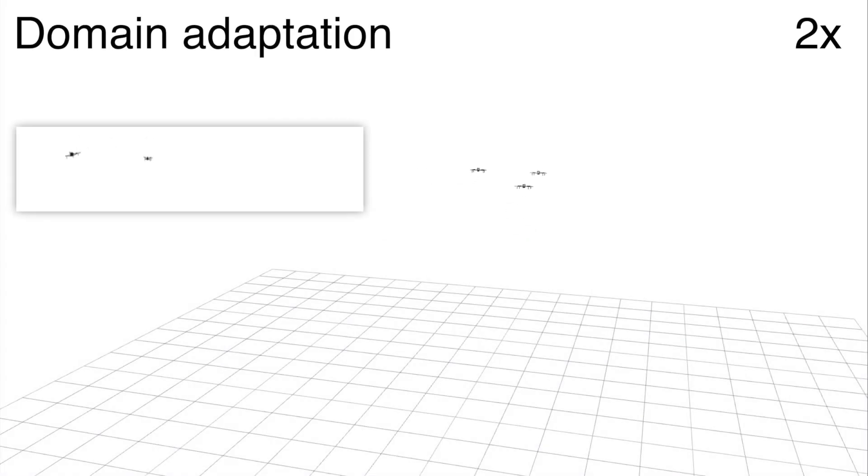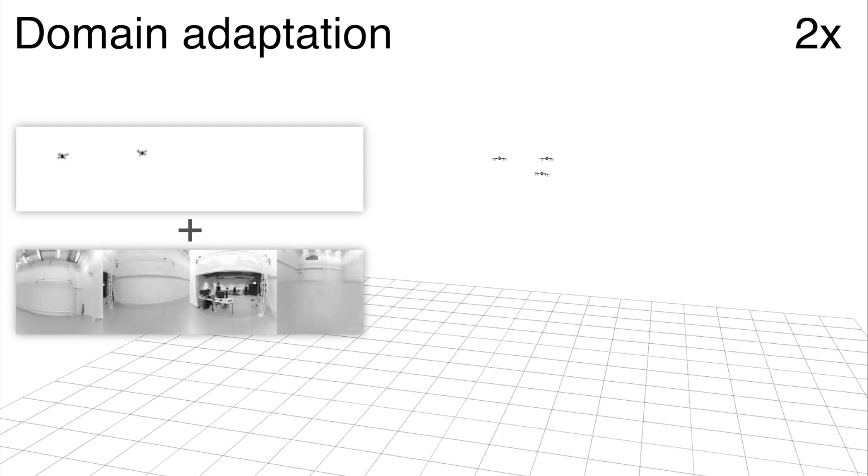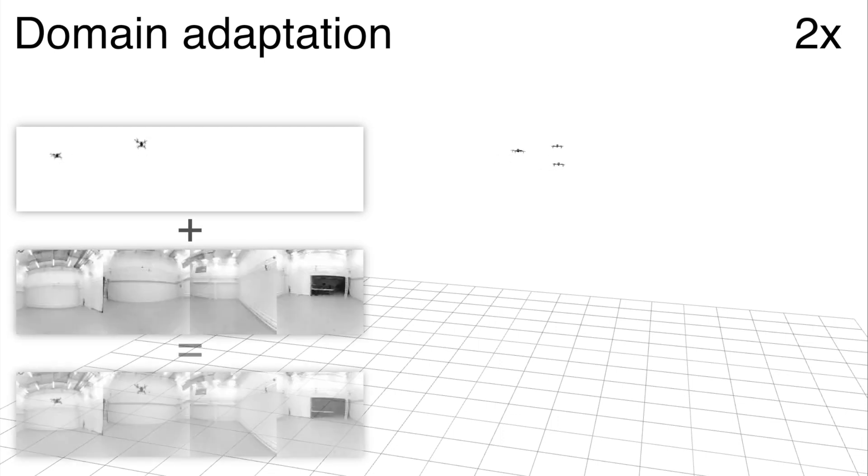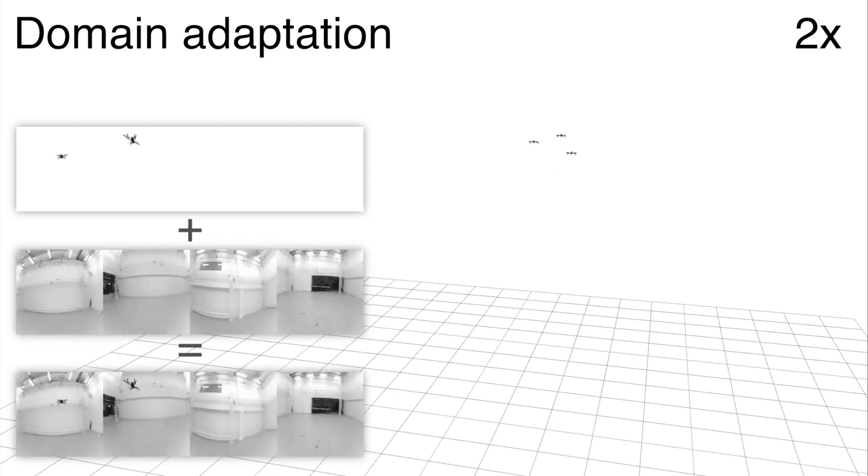In order to transfer the learned controller from simulation to reality, we add backgrounds captured during a real-world flight in the target environment to the image data.